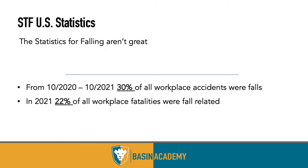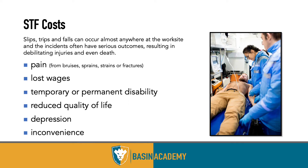The costs of any injury — particularly falls — include pain, lost wages, temporary or permanent disability, reduced quality of life, depression, and inconvenience. Amputations do happen when people fall from ladders or roofs. Construction and tree trimming are notable high-risk areas. If you look through the statistics, a notable number of deaths in the United States every year involve trees.